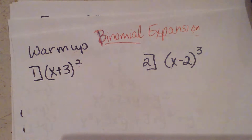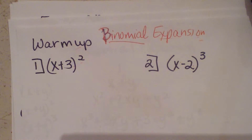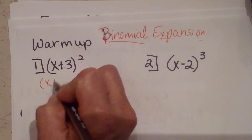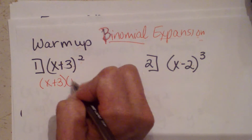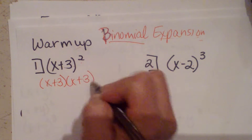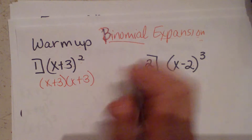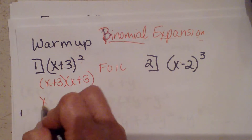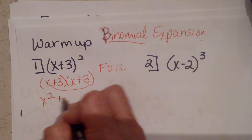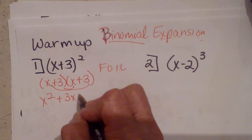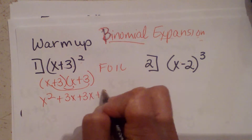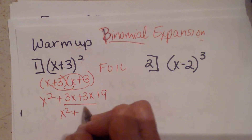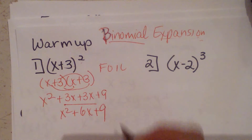Let's review how you've learned to do this up to this point. So you've got x plus three squared. What you're going to do is write x plus three twice and then do what most teachers teach, which is FOIL it — first, outer, inner, and last. Then you combine the two middle terms to get x squared plus six x plus nine.